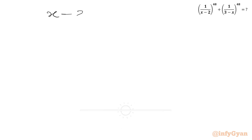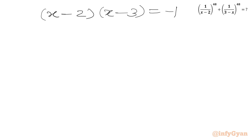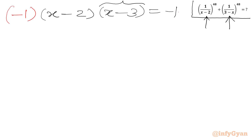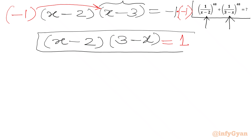We have (x minus 2)(x minus 3) equals negative 1. In our required expression E, we have 3 minus x, not x minus 3. So we multiply both sides by negative 1 to convert x minus 3 into 3 minus x. The right-hand side becomes negative 1 times negative 1 equals 1. This gives us the very important equation: (x minus 2)(3 minus x) equals 1.